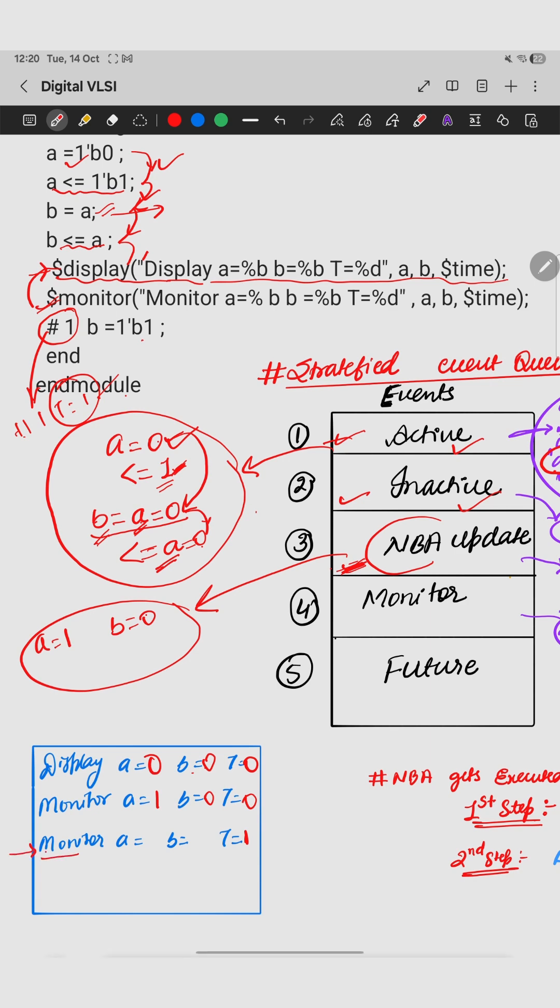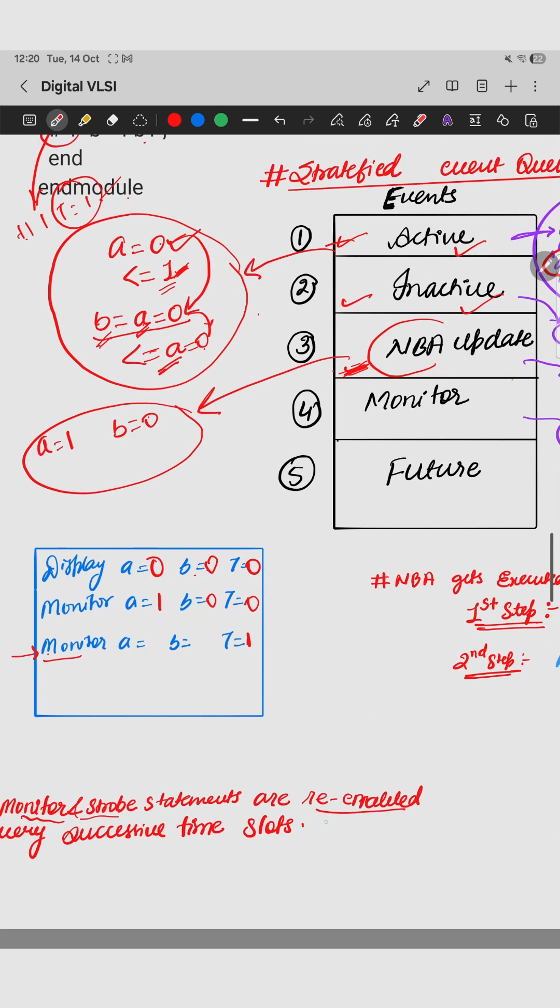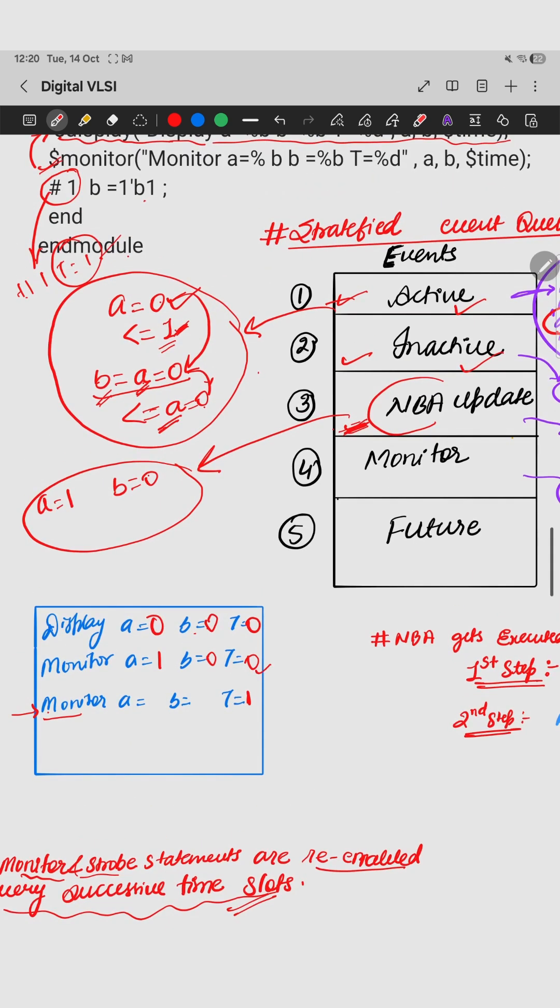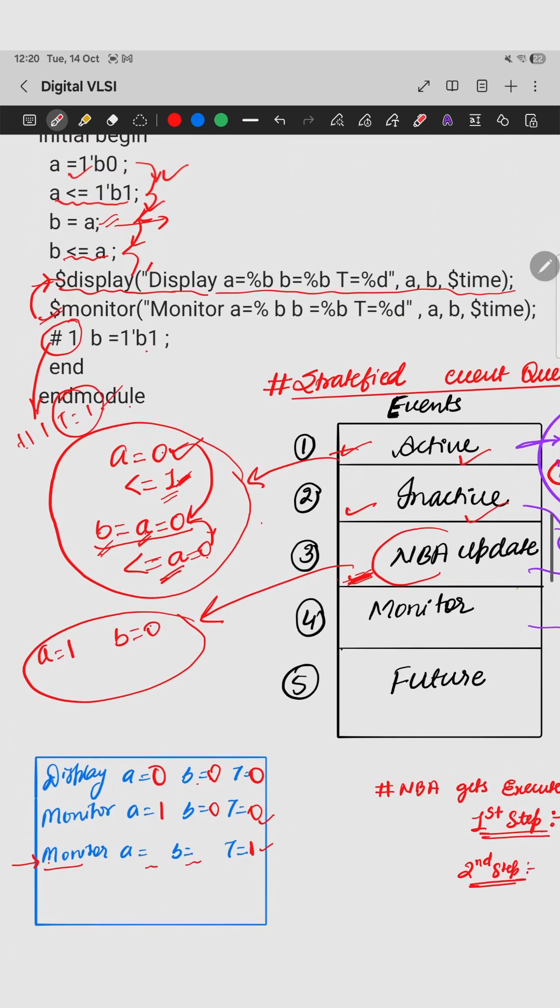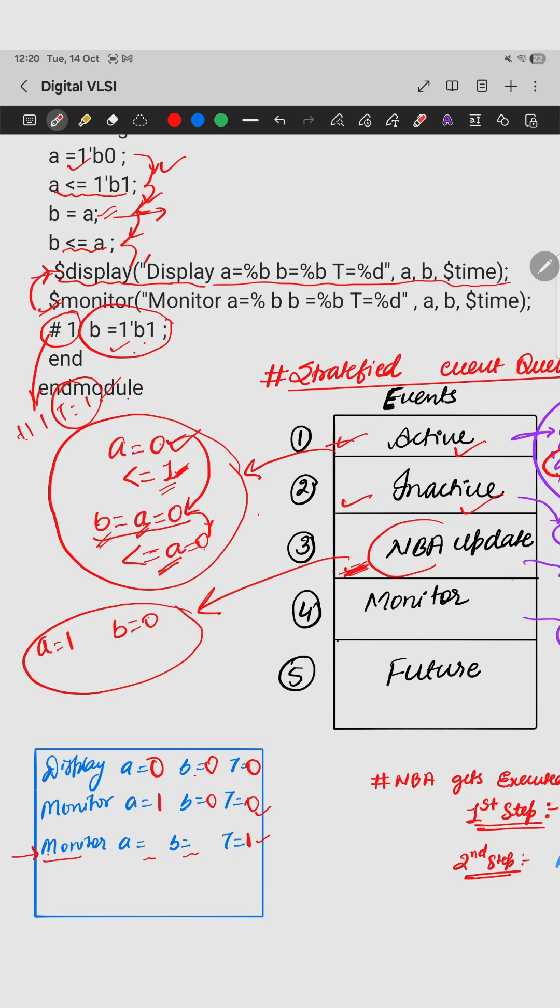Now will this statement execute? Why? Because monitor and strobe, they are the statements which are re-enabled every successive time slot. So if I am changing my time slot and there is a change in the input, monitor will display it. Now what is the change? The change is here—B is getting a value of 1. So here B is changing its value to 1 and A remains same. So monitor will execute, and this will be my output. You can run in Vivado and check it. Thank you very much.